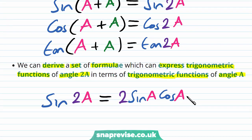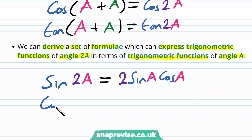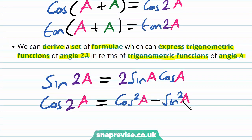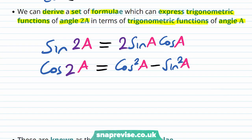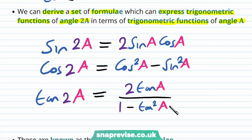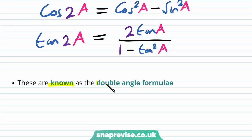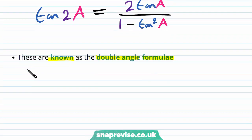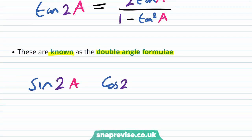In particular, we will show that sine of 2a is the same as 2 sine a cos a, that cosine of 2a is equal to cos squared of a minus sine squared of a, and that tan of 2a is equal to 2 tan a over 1 minus tan squared of a. These are known as the double angle formulae. When we have sine of 2a, cos of 2a, or tan of 2a, we use the double angle formulae to expand.